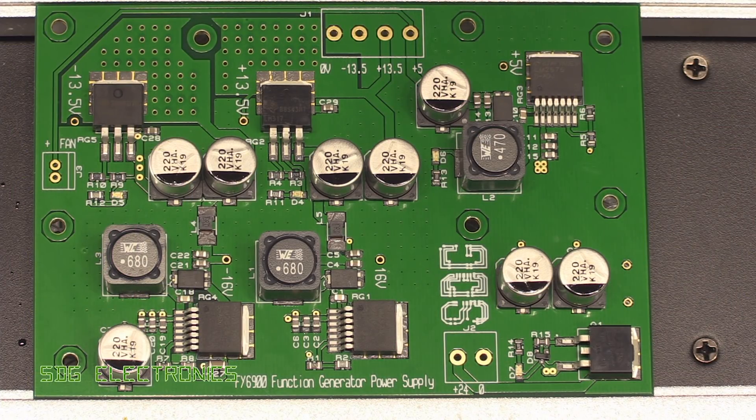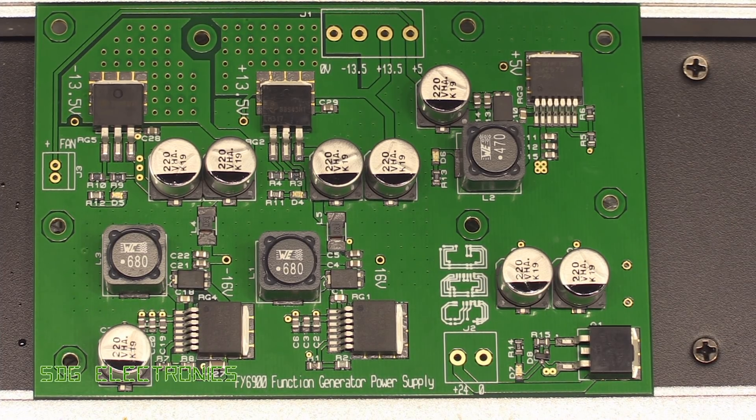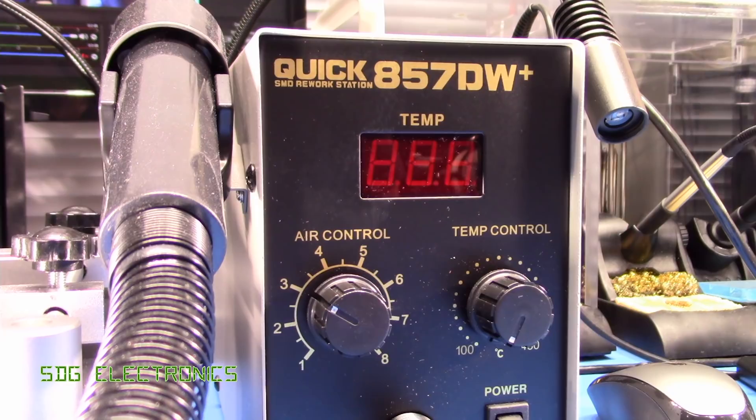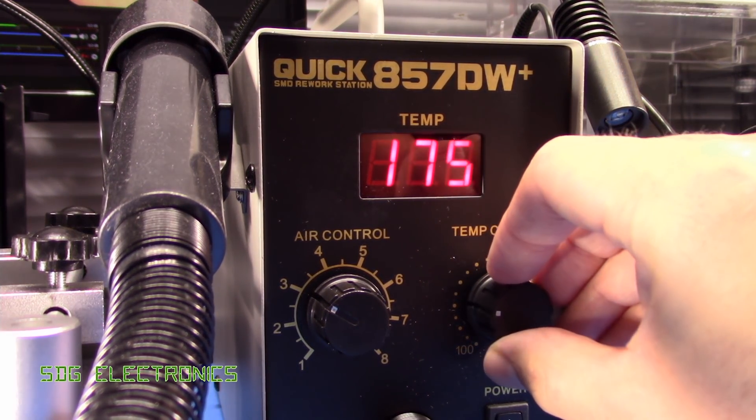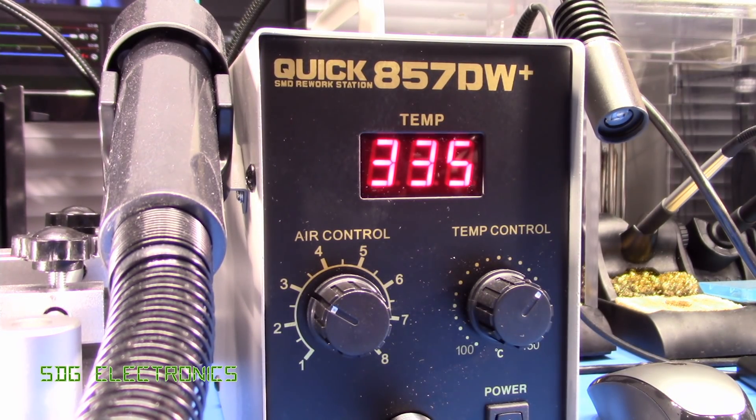Right, so there's our assembled PCB ready for reflow. We're going to heat up the hot plate so that the PCB gets to around 100 degrees. We'll be using the Quick 857 DW Plus to reflow the components once the board is up to temperature.